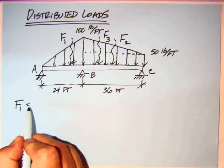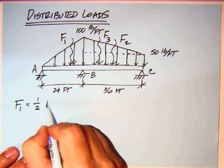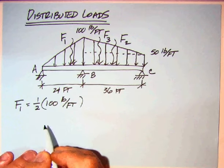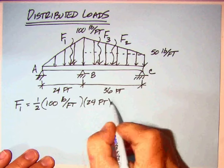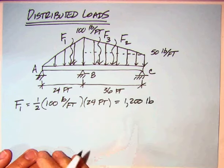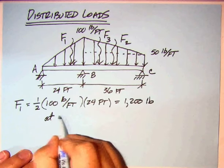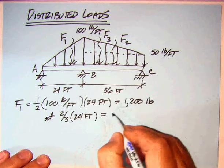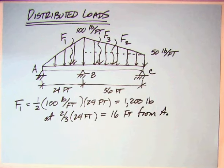F1, it's the area of a triangle. So we've got one half, 100 pounds per foot times the base, which is 24 feet. And when you multiply that out, you get 1200 pounds. And where it's located is at two thirds of the base, which is 24 feet, which equals 16 feet from A. And I'll put all that information on the free body diagram.